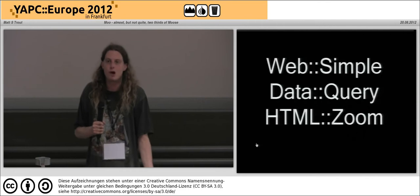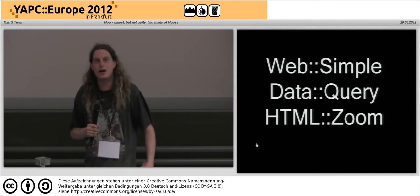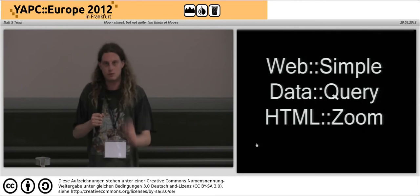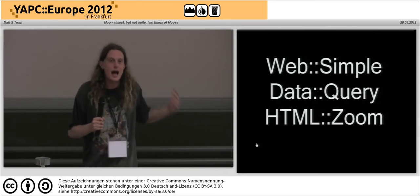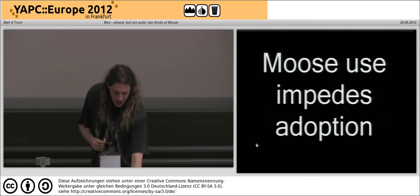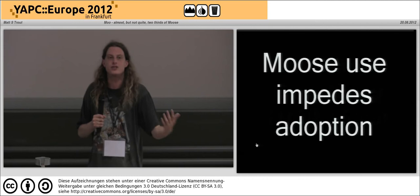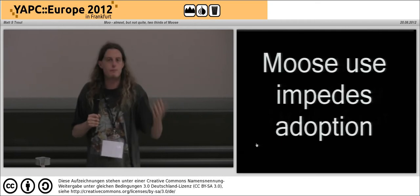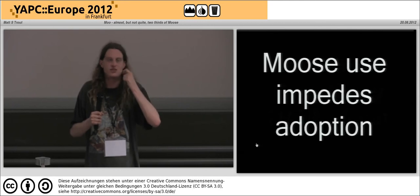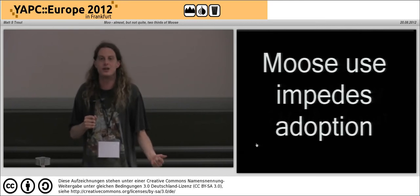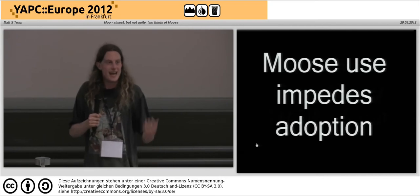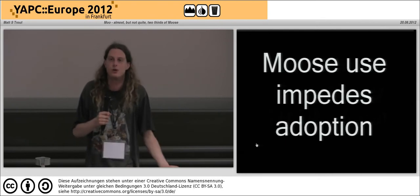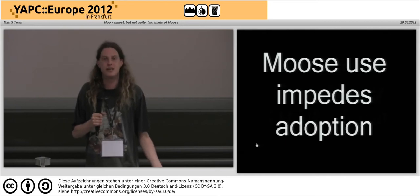Then I found I had more than one project with this sort of problem — Data::Query, HTML::Zoom, various other bits. The problem for those was that in order to get the widest user base, because these were meant to be very low-level things used in multiple ways, depending on Moose would massively impede adoption. You have certain shops with such a dysfunctional sysadmin situation that building a dozen packages rather than four to get a module is actually a reason not to use it, because it'll take the developers' entire afternoon. You have people who are still deploying CGI scripts.